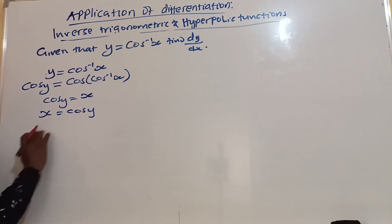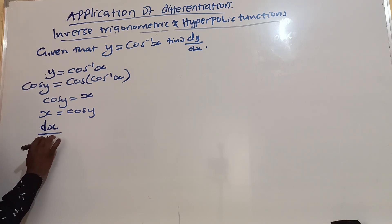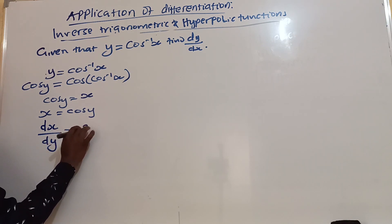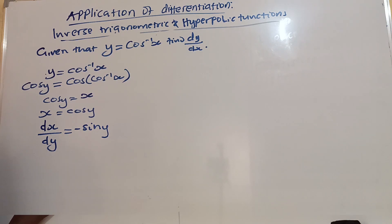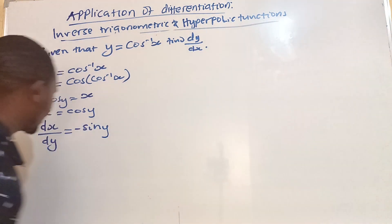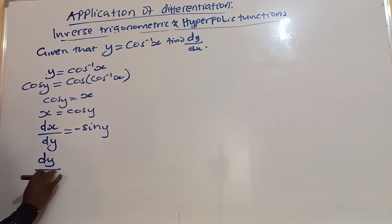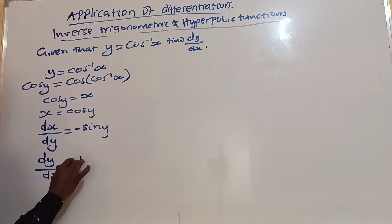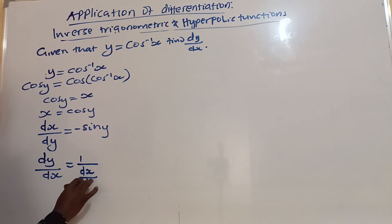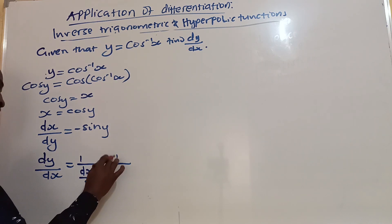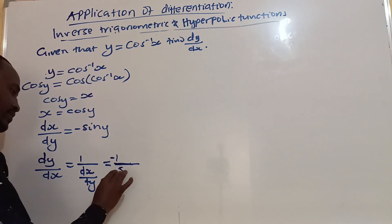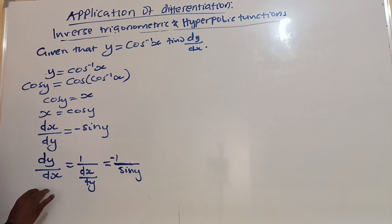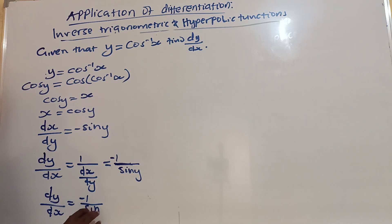Now, let us differentiate both sides with respect to y. The derivative of x with respect to y is equal to negative sin y. But what we want at the end of the day is the derivative of y with respect to x. The derivative of y with respect to x will be the reciprocal of dx/dy, which is 1 over negative sin y. So dy/dx = −1 over sin y.